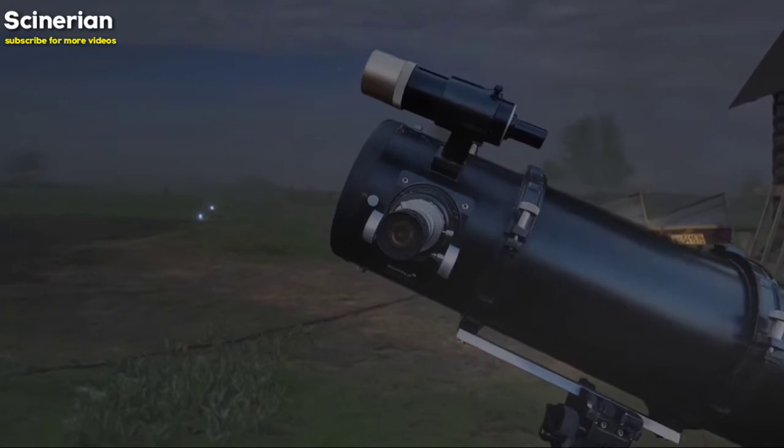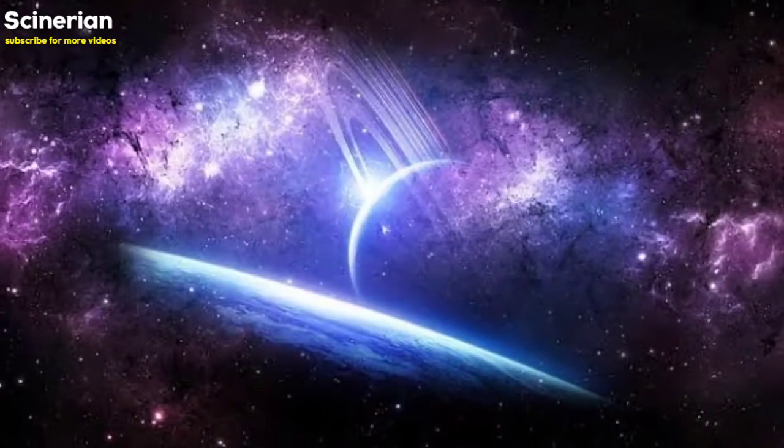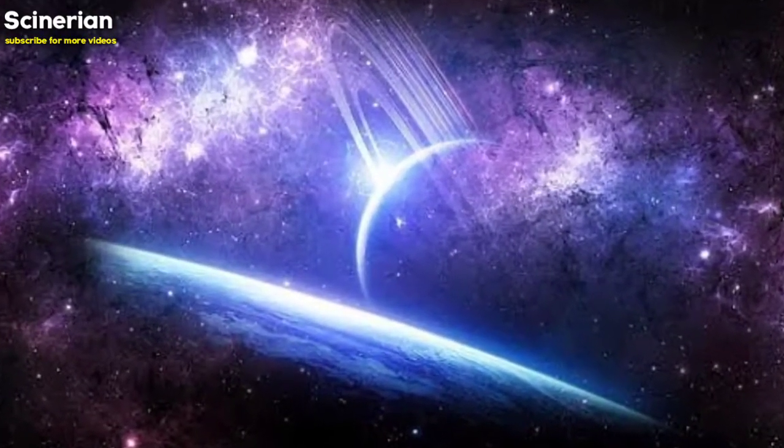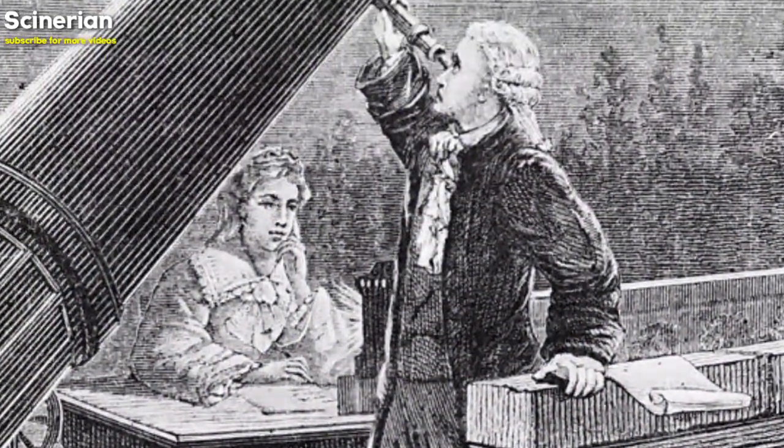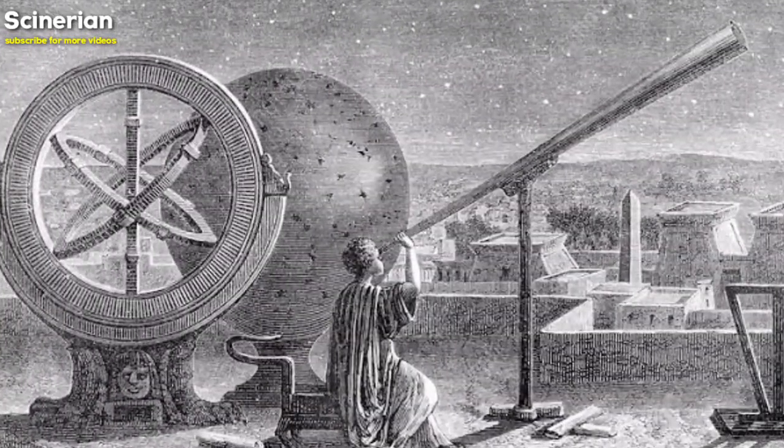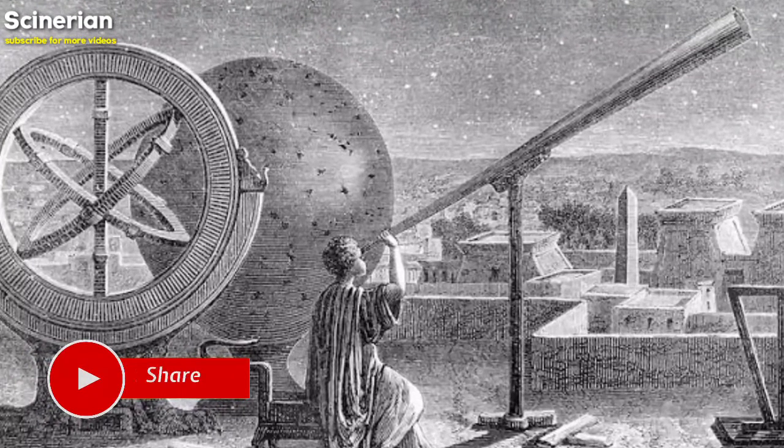Uranus was the first planet to be discovered with the help of a telescope. But do you know that before Sir William Herschel it was not recognized as a planet? When ancient astronomers first observed Uranus they mistook it for a star.